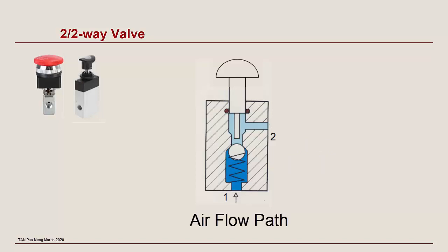Let us now trace the airflow path of the valve at different switching positions. When the valve is not activated, compressed air supply to port 1 is blocked.